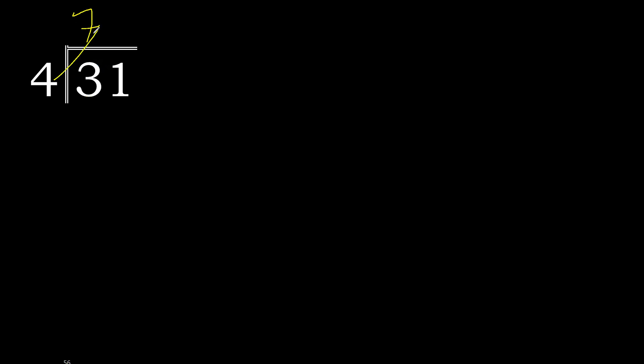But not greater. 4 multiplied by 8 is 32, and 32 is greater. Therefore multiplied by 7: 4 multiplied by 7 is 28. 28 is not greater. 31 minus 28 is 3.